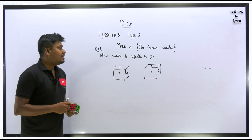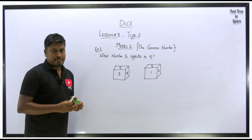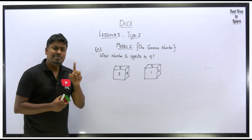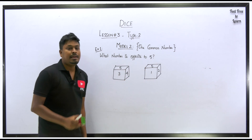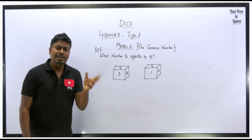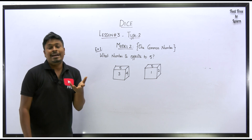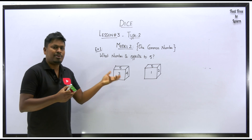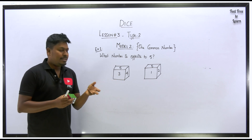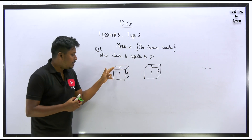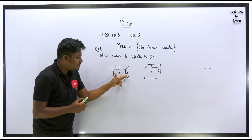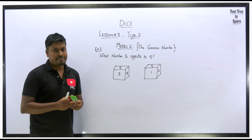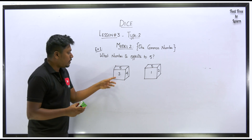Example 1 from Model 2: what number is opposite to 5? Looking at both diagrams, the number 5 is common in both. When one number is common, use the shortcut or logical reasoning. By inspection: 5 is adjacent to 3, 4, 1, and 2 across both diagrams, so all four side faces are accounted for. The only remaining number — 6 — must be the opposite face. So opposite to 5 is 6.